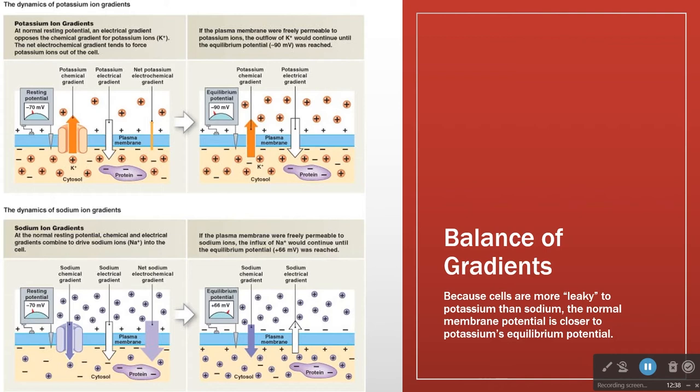So the membrane potential at any given time is going to be determined by how permeable potassium is and how permeable sodium is. This establishes the base electrical difference that will let us have an action potential.